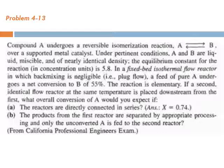A feed of pure A undergoes a net conversion to B of 55 percent, so the conversion is 55 percent. The reaction is elementary, so you can easily write the rate law. In a second identical flow reactor at the same temperature placed downstream from the first, what overall conversion of A would you expect?